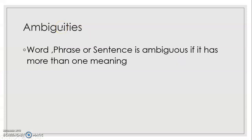Ambiguities meaning inexactness. A word, phrase, or sentence is ambiguous if it has more than one meaning associated with it. When a word has exactly one meaning, it is called a non-ambiguous word. But when a word has multiple meanings associated with it, it is called an ambiguous word. Similarly, a sentence or phrase with multiple meanings creates confusion, making it challenging in NLP to find the exact meaning for a particular word and discard the rest.